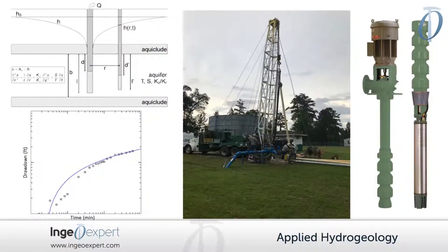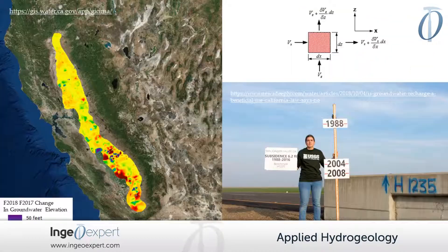Module 2 will introduce Darcy's Law and classic well hydraulics for water supply. This module will also explore single and multi-well analytical pump test solutions for assessing aquifer transmissivity and storativity. Finally, groundwater-related engineering concepts including dewatering, ground subsidence, and one-dimensional consolidation will be explained.